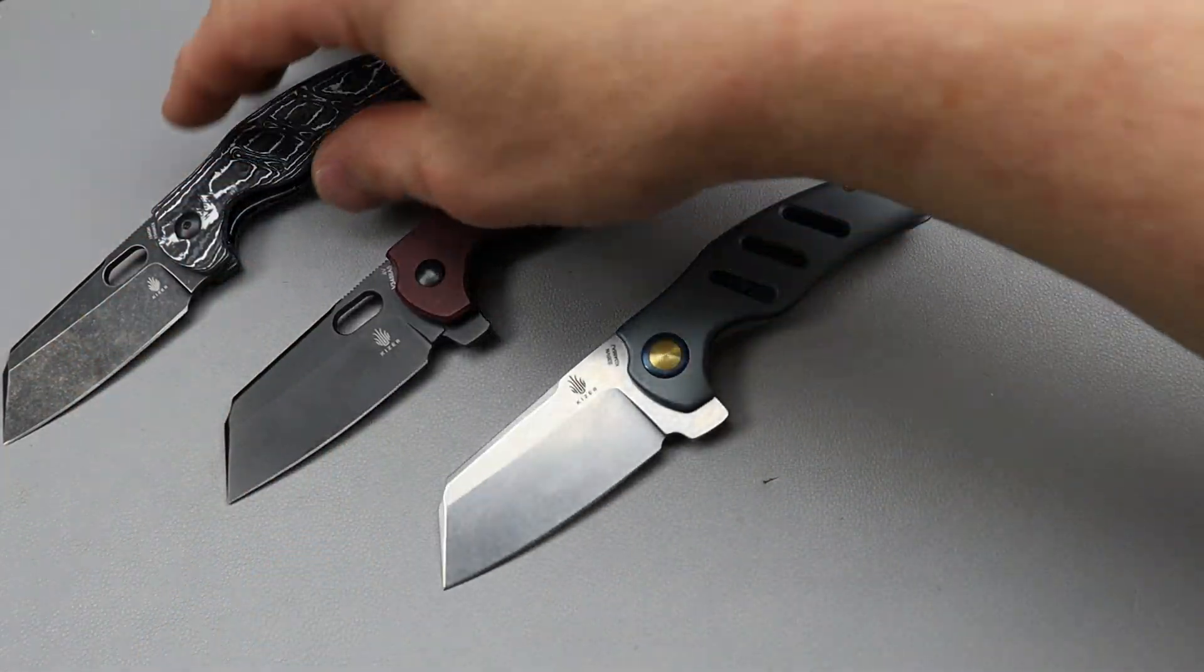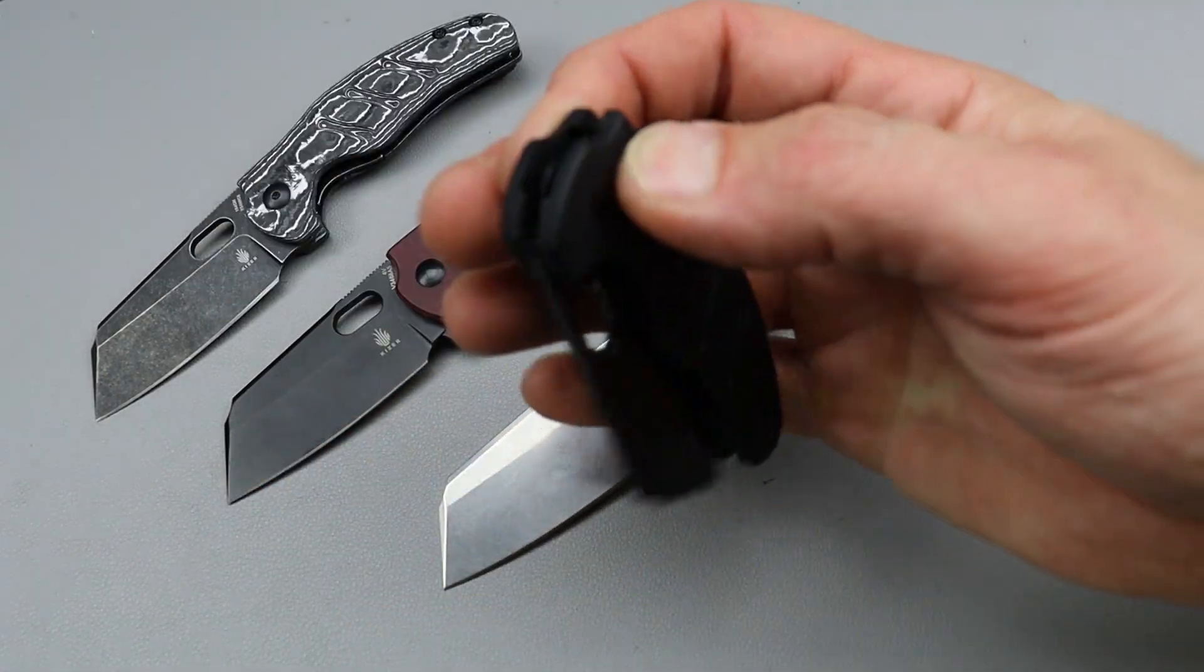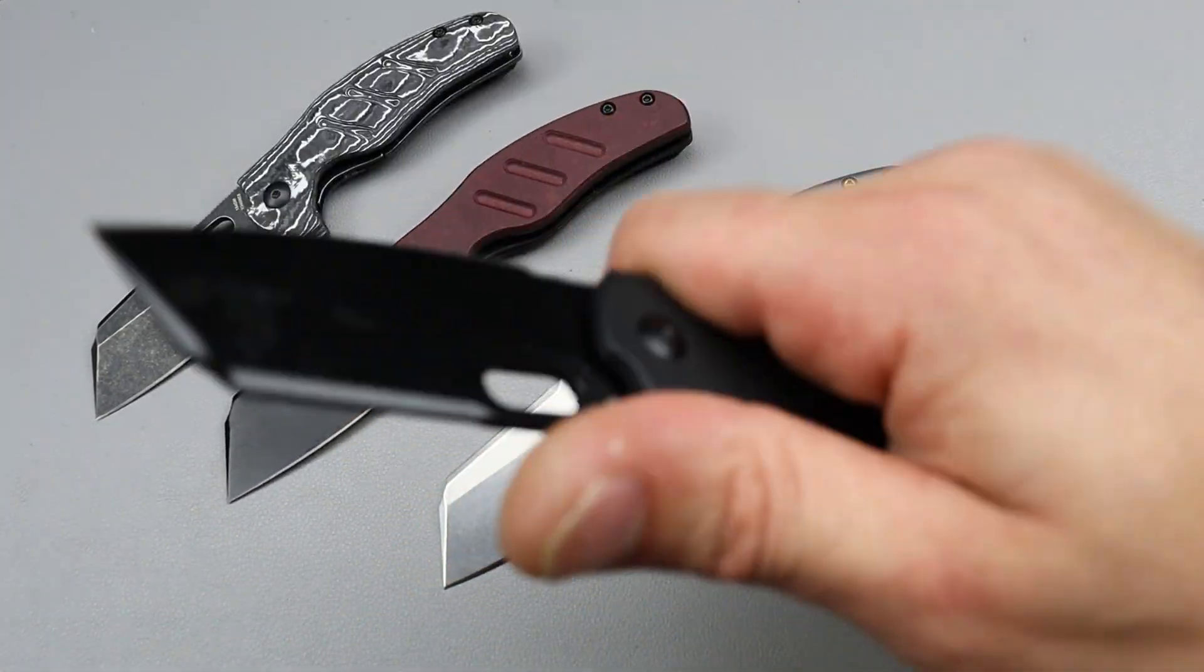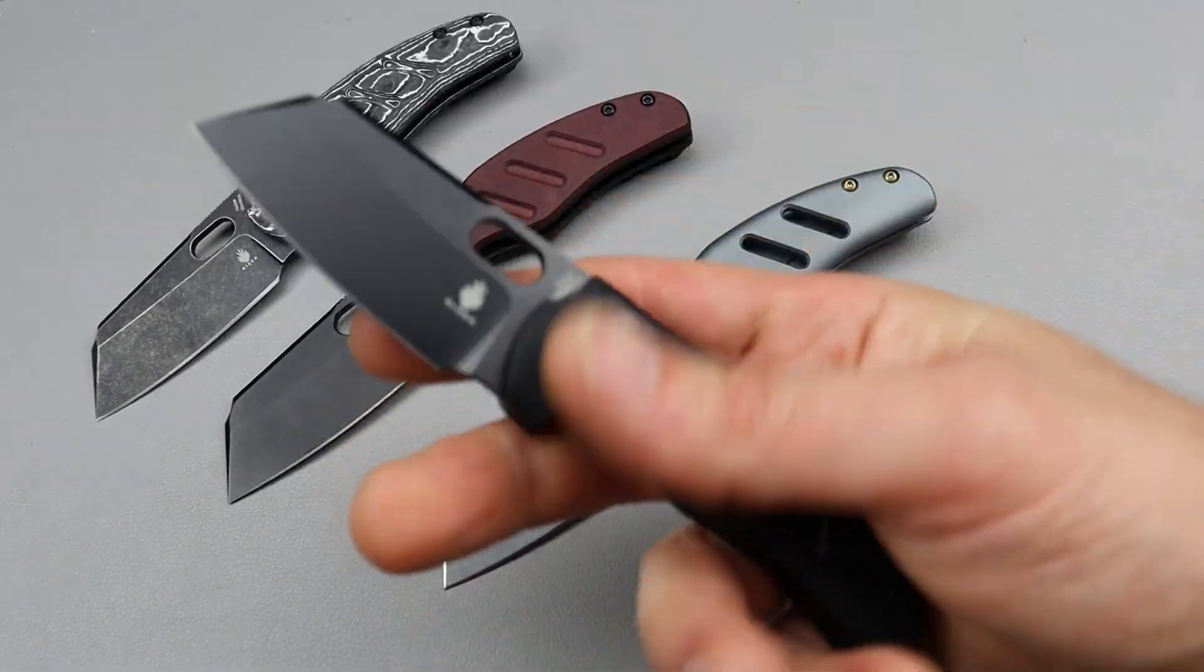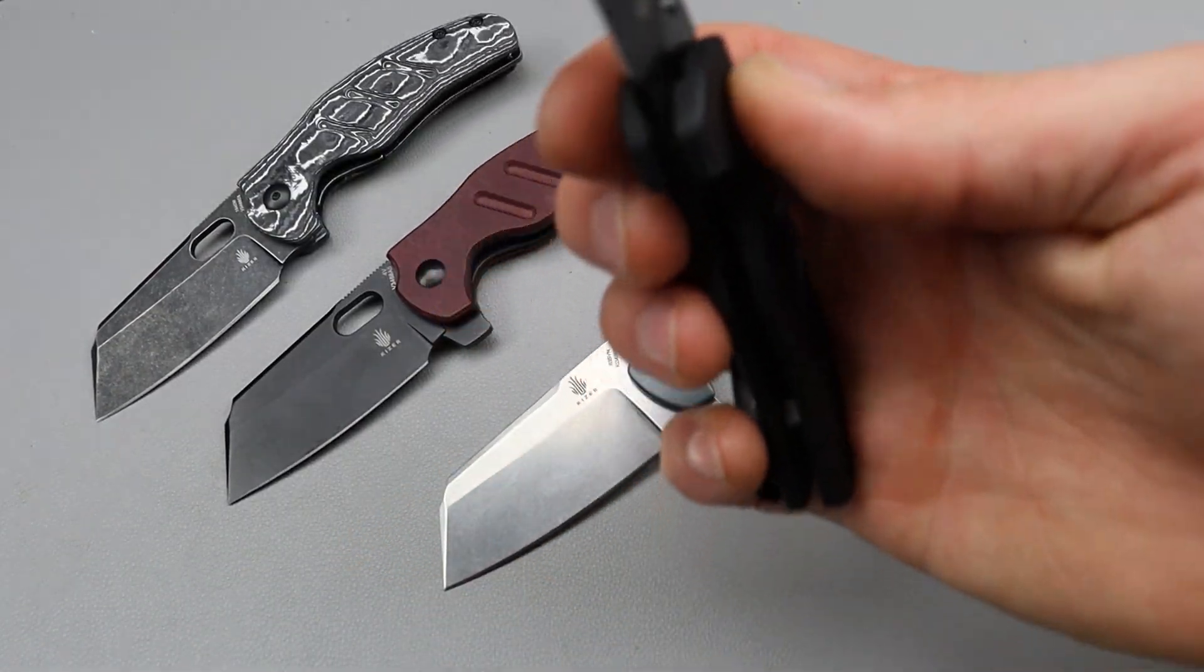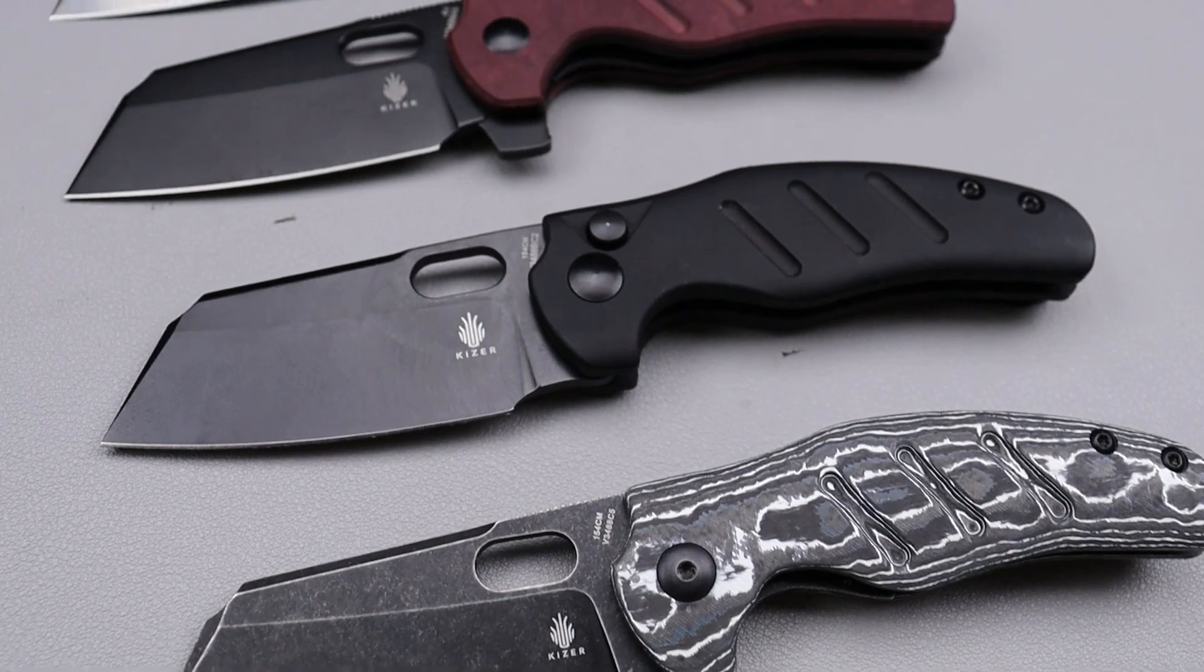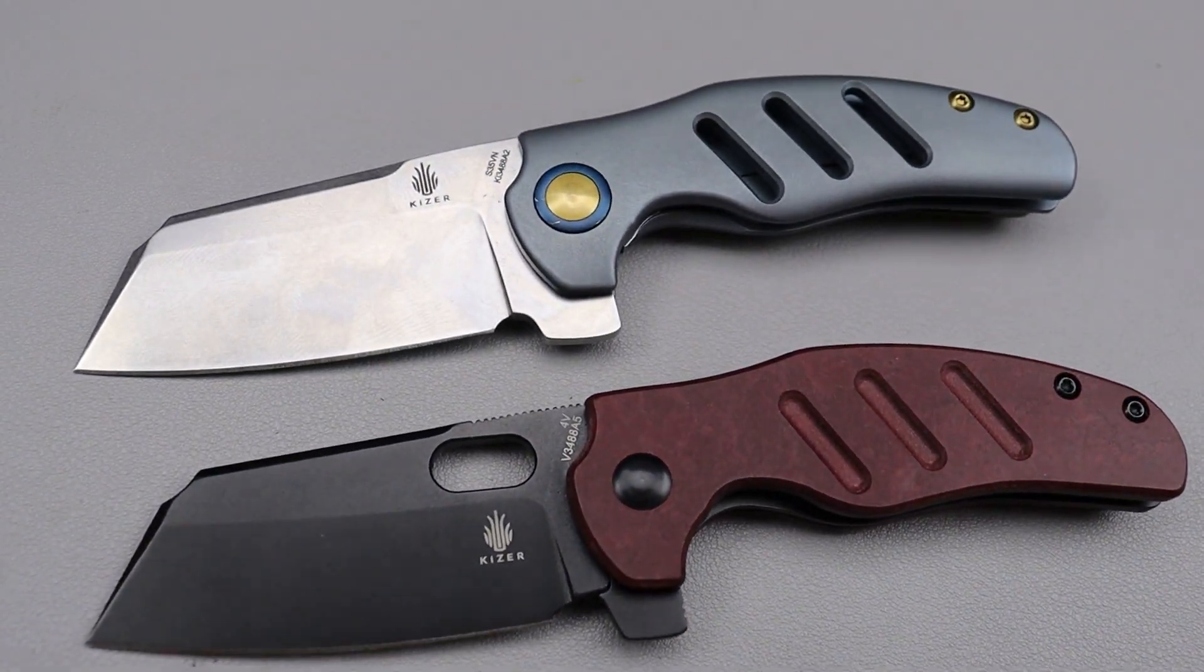They come in all different steels. Here's a button lock version. So many options when it comes to the Sheepdog and so many sizes, colors, different steel options. There's basically unlimited.